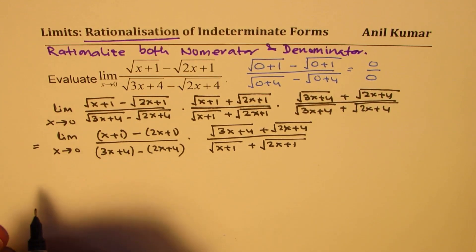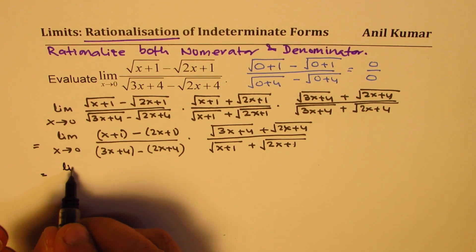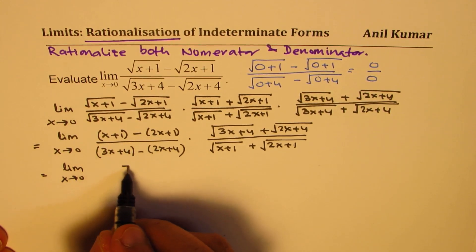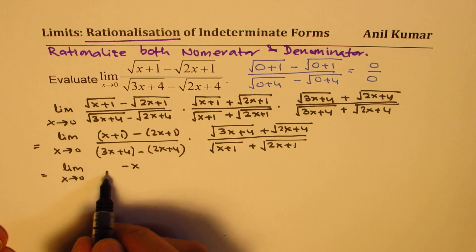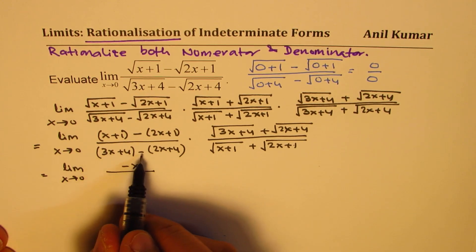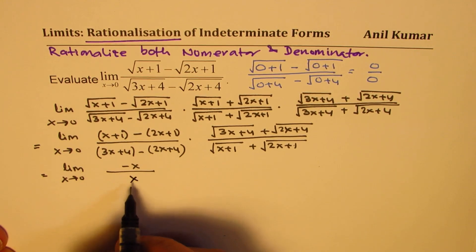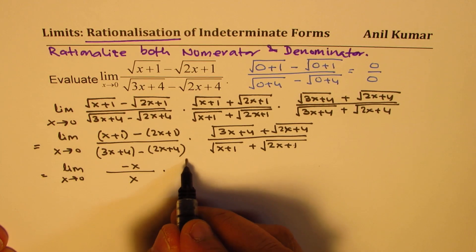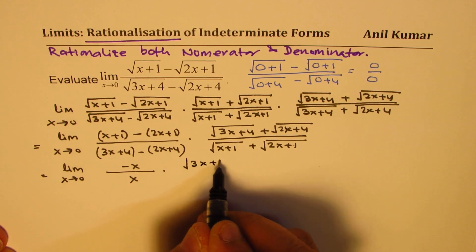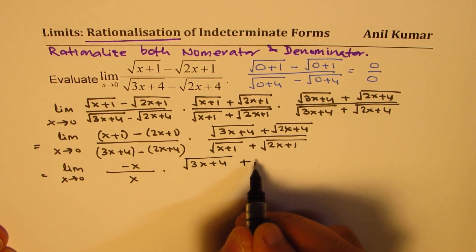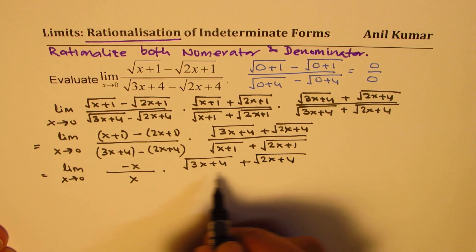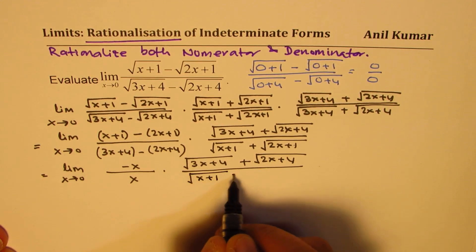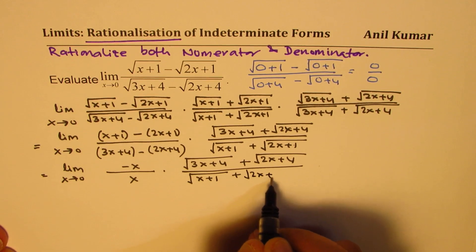Now let's simplify this. We get limit as x approaches 0. In the numerator: x minus 2x is minus x, and 1 minus 1 is 0. In the denominator: 3x minus 2x is x, and 4 minus 4 is 0. So we get minus x over x, times the quantity square root of (3x plus 4) plus square root of (2x plus 4), divided by square root of (x plus 1) plus square root of (2x plus 1).